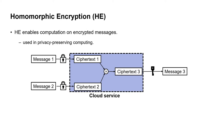So what is homomorphic encryption, or HE? HE is a cryptographic scheme that enables computations on encrypted messages. A user encrypts message 1 and 2 into ciphertexts, then sends them to a service provider who can compute on the ciphertexts without ever decrypting. The provider sends back ciphertext 3, which is the output of the homomorphic multiplication between ciphertext 1 and 2. After decryption, the user can get message 3, which is the same as the multiplication output between message 1 and 2.